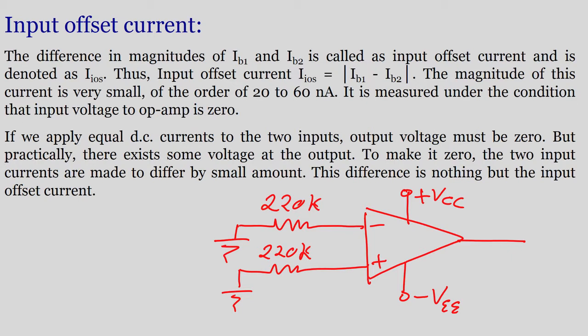Using that same circuit, we can understand input offset current. The difference in the magnitudes of IB1 and IB2 is called the input offset current — unlike bias current where we added them, here we take the difference. It is denoted as IOS, so: IOS = |IB1 - IB2|.